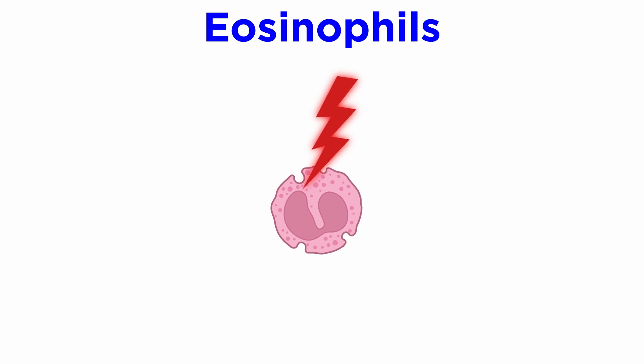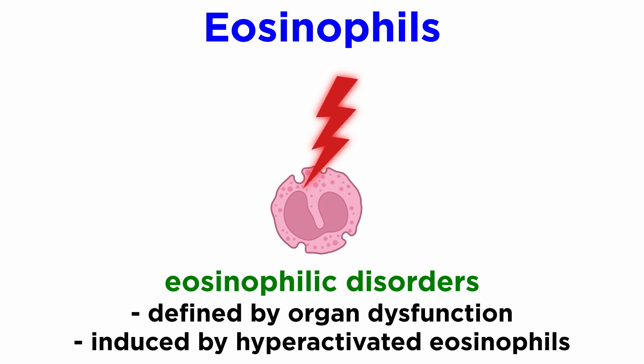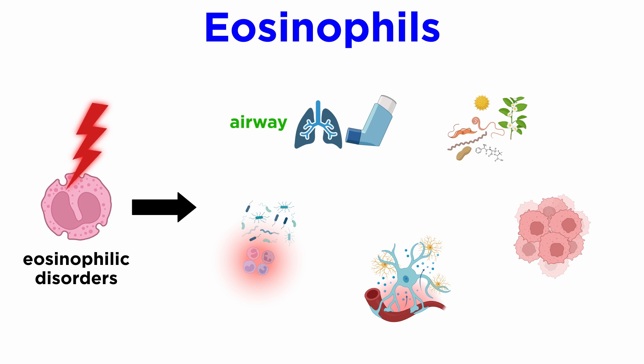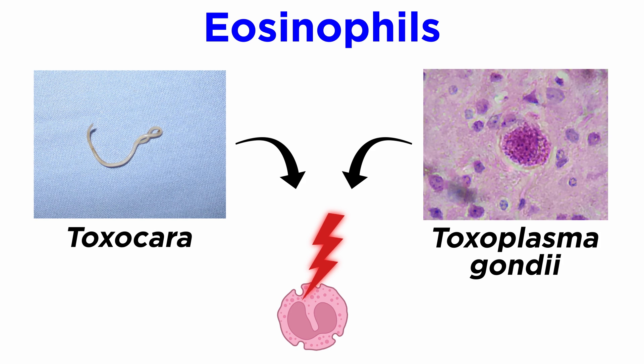Eosinophils are implicated in a wide range of pathologic conditions. Eosinophilic disorders are defined by organ dysfunction primarily induced by hyperactivated eosinophils, and this can be single-organ or multiple-organ disease accompanied by a variable degree of blood eosinophilia. For example, asthma is an inflammatory airway disease frequently characterized by airway eosinophilia. Furthermore, eosinophilia can be secondary or reactive to infections, allergies, autoimmune disorders, and neoplastic disorders. Some of the most frequent causes in developing and tropical countries are tissue-invasive parasitic infections such as Toxocara species and Toxoplasma gondii.